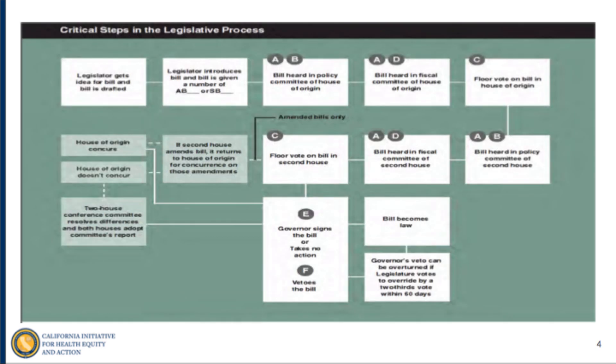The legislative process — think of it like a Monopoly board game. It isn't a one-way road map; sometimes you go from A to B to C and then back to A again. It usually starts when somebody has an idea, like expanding access to mental health services. That idea goes to legislative counsel, who writes it into legal format. It's introduced at the front desk on the floor and gets a bill number: AB for assembly bill or SB for senate bill, designating which house it originated in.